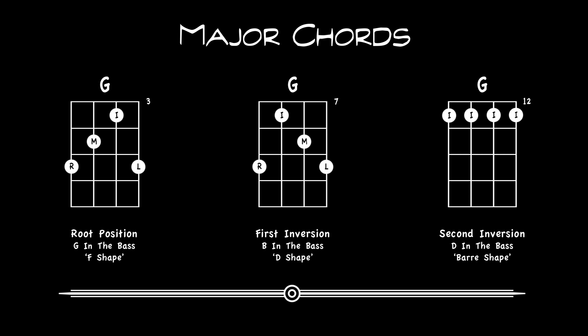In the previous video we learned that a major chord is built using the first, third, and fifth degrees of the major scale. In the key of G, that's G, B, and D. If we were to stack the notes in this order with the G as the lowest bass note, this is called the root position chord.